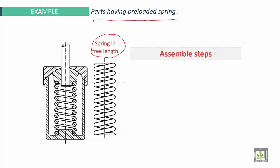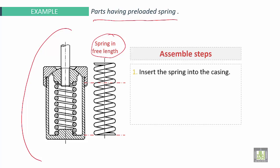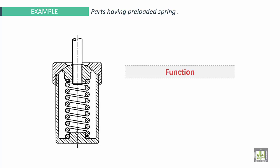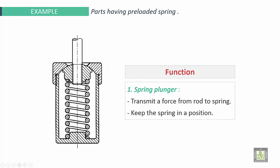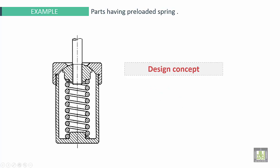Last example, parts having pre-loaded spring. We have spring in a free length and here the assembly. Assembly steps. First one, insert the spring into the casing. Second, tighten the rod to the spring loader. Third, close the cap and tighten. As a function, spring plunger transmit a force from rod to spring. Second, keep the spring in a position. As a design concept here, the spring plunger has a spherical surface contact to the cap. Therefore the rod can align itself to original position.